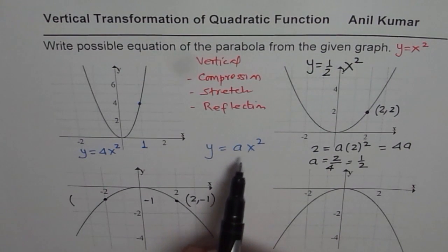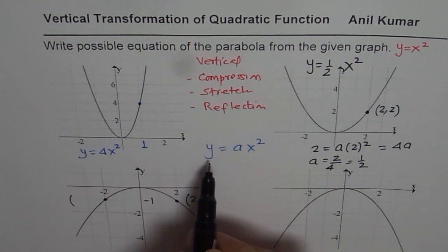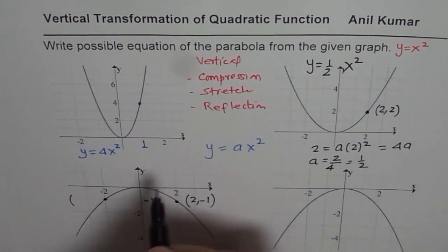What we will do is, we will substitute this value in our expression, y equals to ax square, find the value of a. Y value is minus 1, x value is 2. Let me do the calculations on the right side.